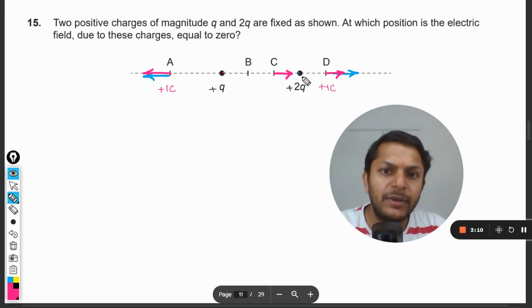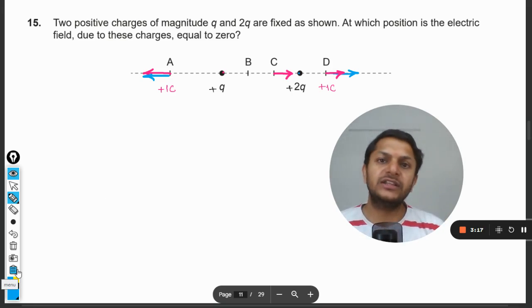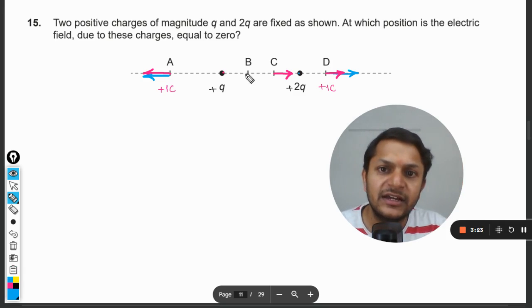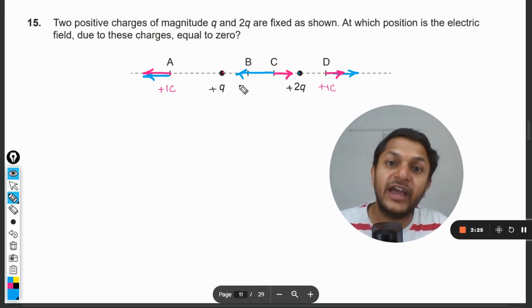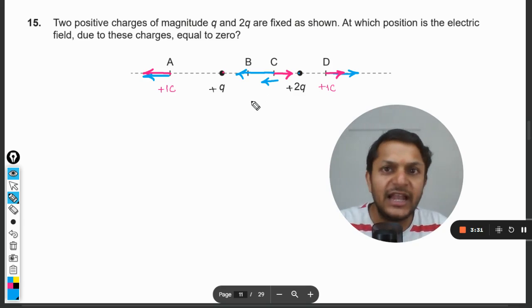But 2q charge is placed very near, so C is a point which is nearer to 2q, thereby the effect will be more. Also, the 2q is having double the quantity of the charge. It means that the repulsive force will be way more than the other force, so the net force on C will be towards left hand side.